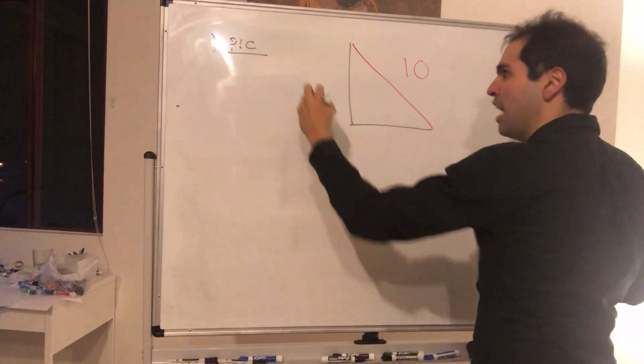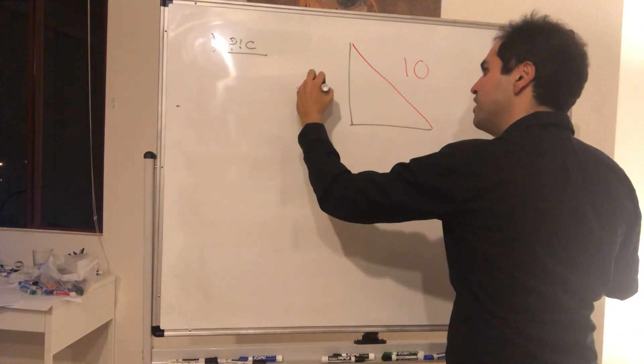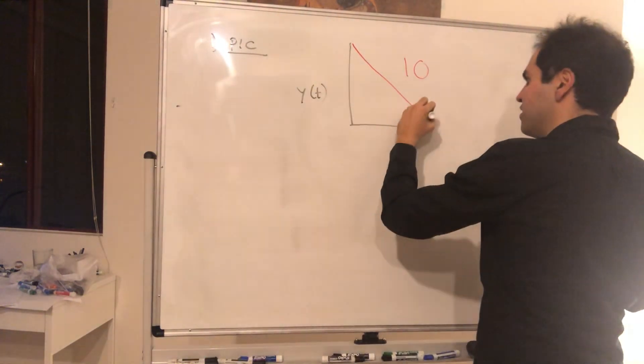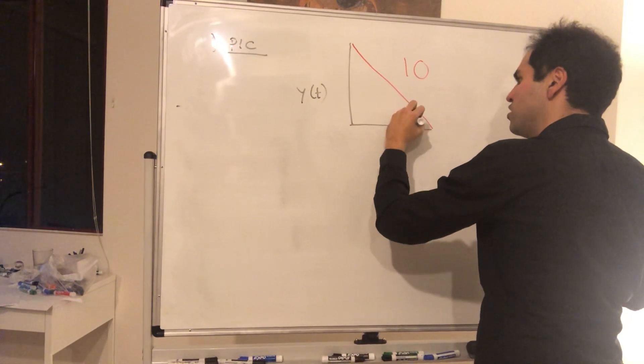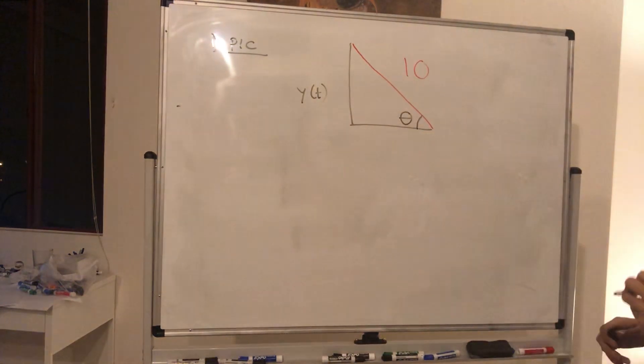And then what else do we have? We have information about the height. Let's call it y of t and also information about the angle. Let's call it theta.